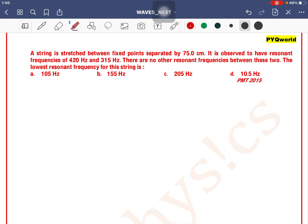A string is fixed between fixed points separated by 75 centimeters. It is observed to have resonant frequencies of 420 Hz and 350 Hz. There are no other resonant frequencies between these two. The lowest resonant frequency for this string is...